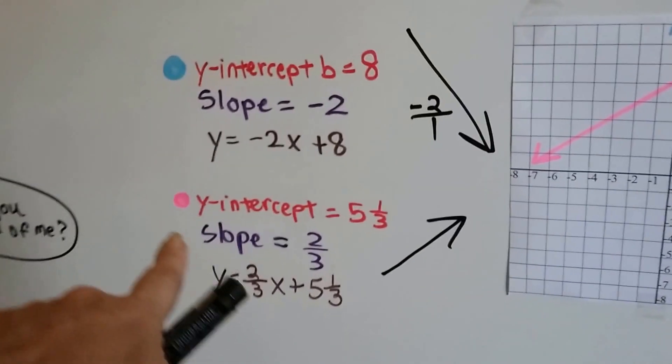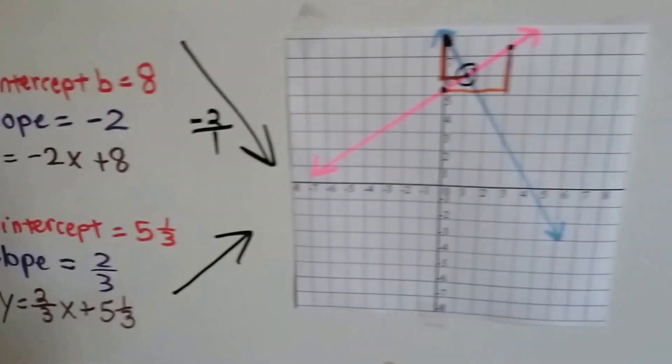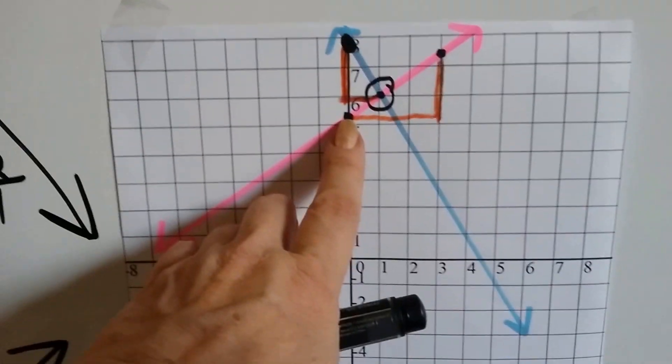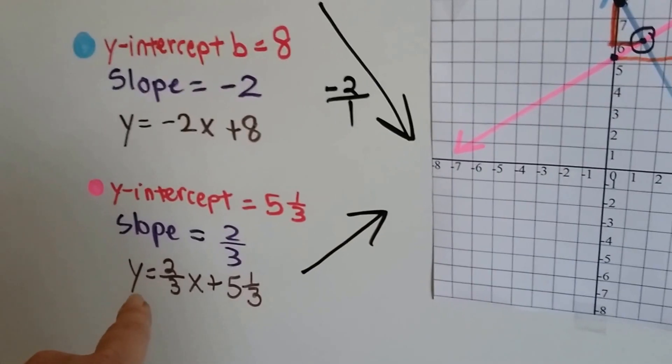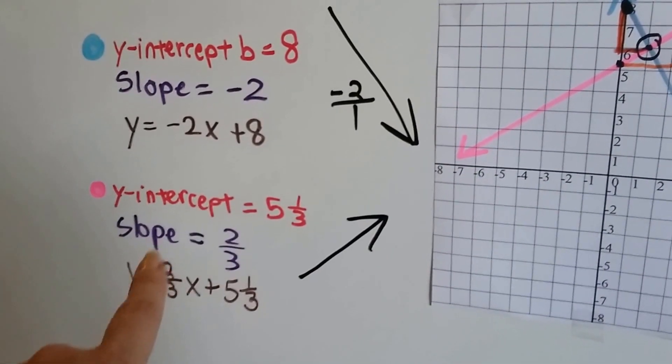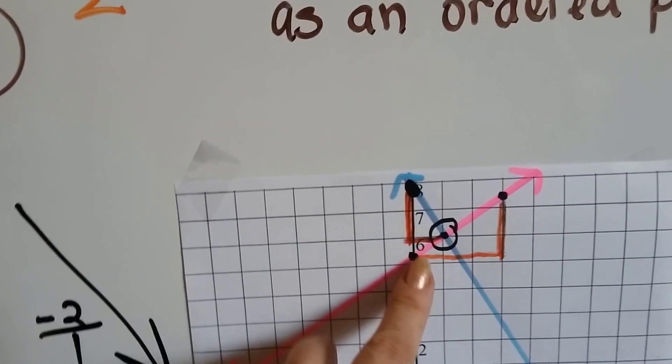So now the pink line, that's why there's a pink dot. We know the y-intercept is at 5 and a third. So we find on the y-axis 5 and a third. It's about right there. It's not quite half. And it's got a positive slope, so we're going upwards of 2 over 3. Our rise over a run is 2 over 3.